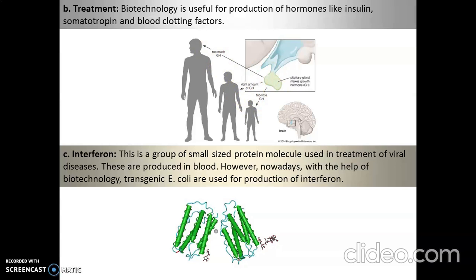Nowadays, with the help of biotechnology, transgenic E. coli are used for the production of interferons. The interferons look similar to a specific structure. They are very similar to vaccines in function. Then we have gene therapy.